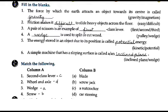The energy stored in an object due to its position is called potential energy. When any object is at rest in its position, it has potential energy. And when that same object starts moving, it has kinetic energy.